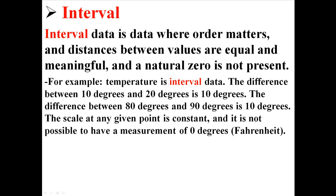For example, temperature is interval data. The distance between 10 degrees and 20 degrees is 10 degrees. The distance between 80 degrees and 90 degrees is 10 degrees. The scale at any given point is constant, but it's also not possible to have a measurement of zero degrees Fahrenheit.